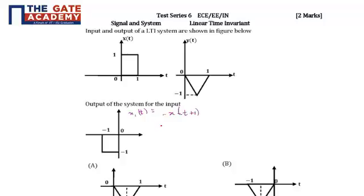Similarly, the new output y1(t) should be equal to minus y(t+1). If it is negative then it is upwards, okay, this goes upwards. And again taking advance, this will give us nothing but option C.